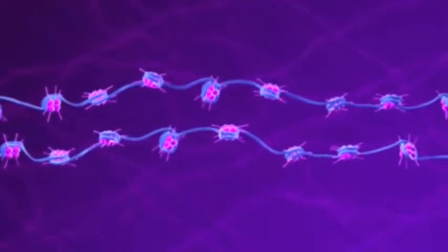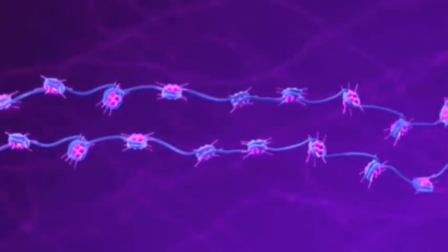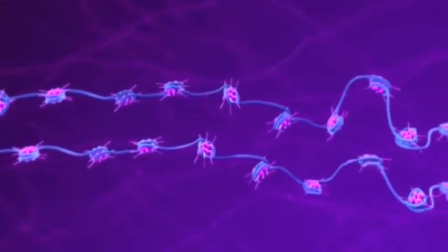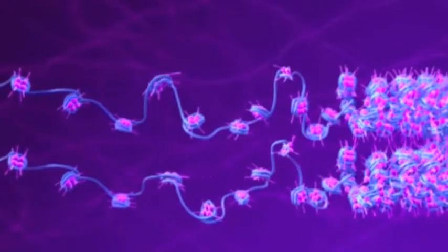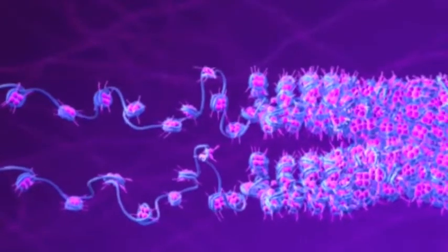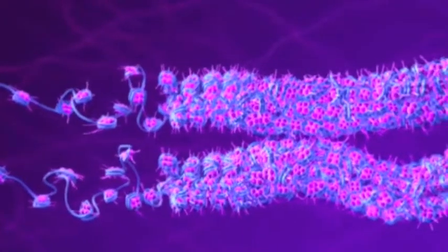Getting closer, we see that each sister chromatid consists of DNA wound around small proteins called histones. The sister chromatids begin to coil into tight helical fibers.